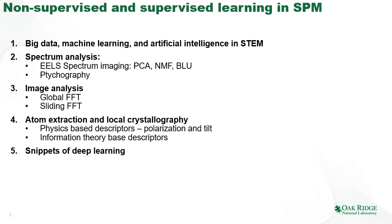In this lecture we are going to briefly talk about why we need to apply big data, machine learning and artificial intelligence in electron microscopy, briefly discuss the application of nonlinear and linear unmixing methods such as principal component analysis, non-negative matrix factorization and Bayesian linear unmixing, for analysis of electron energy loss spectroscopy or EELS spectrum imaging, and for analysis of four-dimensional STEM or ptychography. We will also discuss image analytics using global and sliding Fourier transform, analysis based on atom extraction and local crystallography, and look at snippets on the application of deep learning in image analytics in STEM.